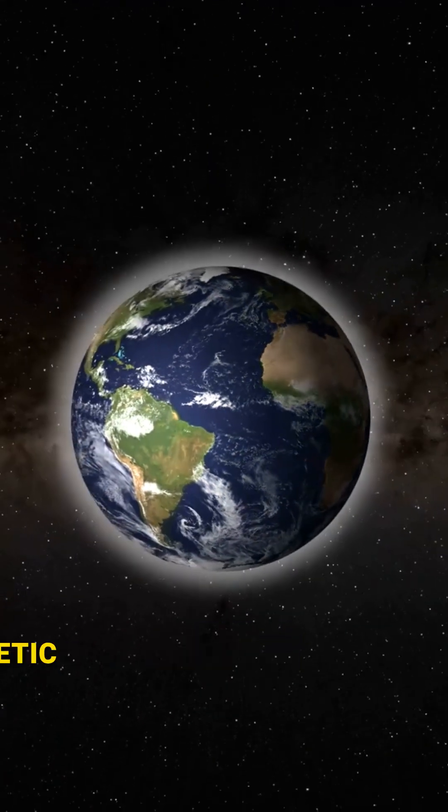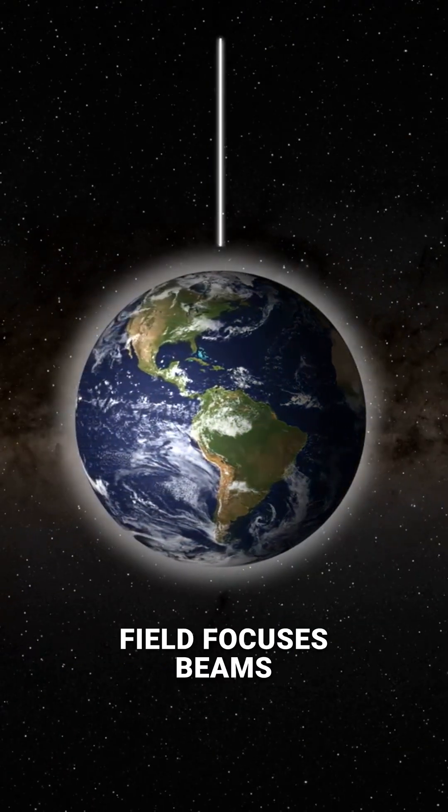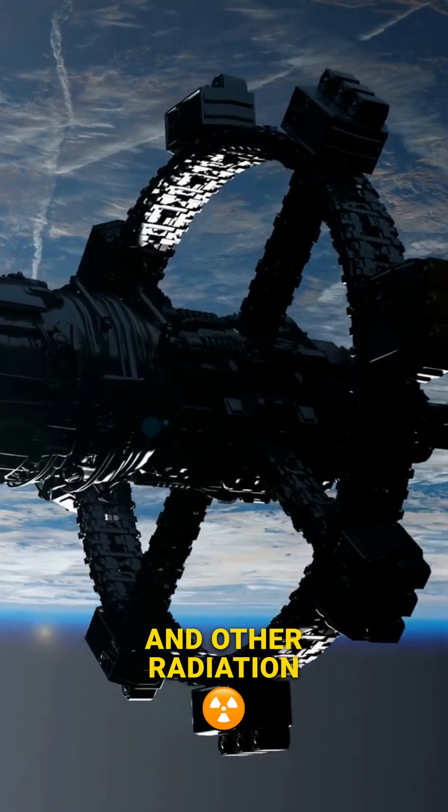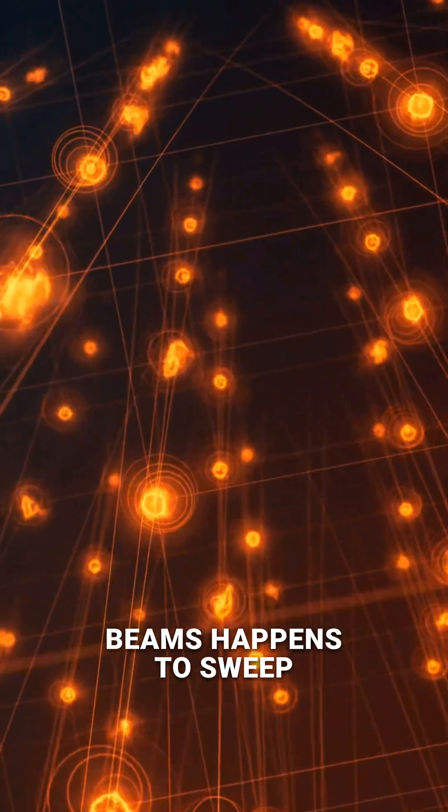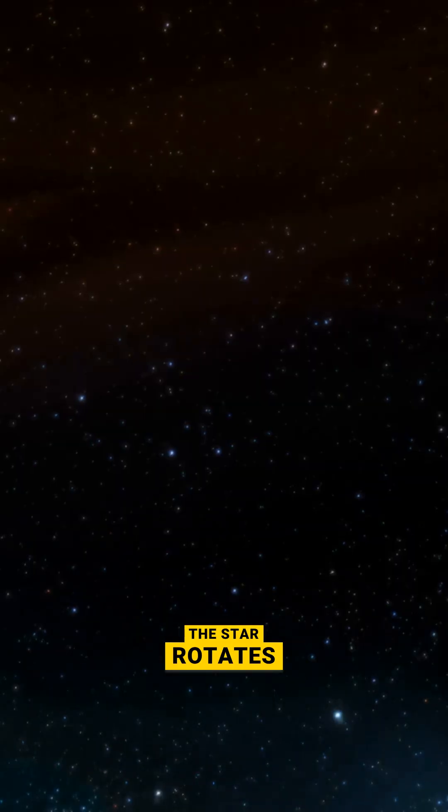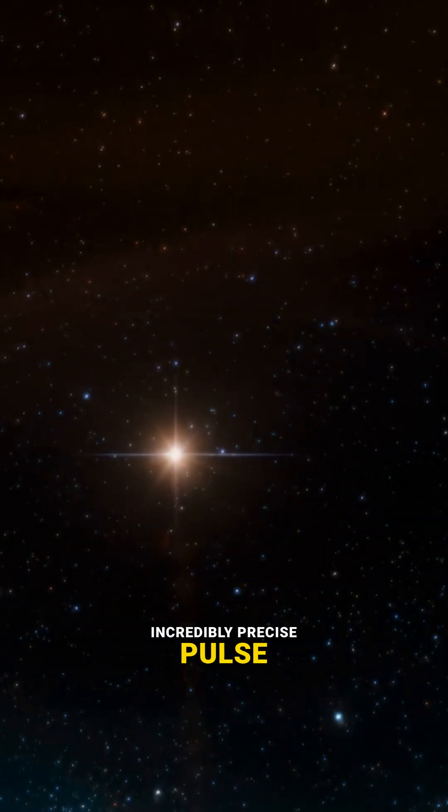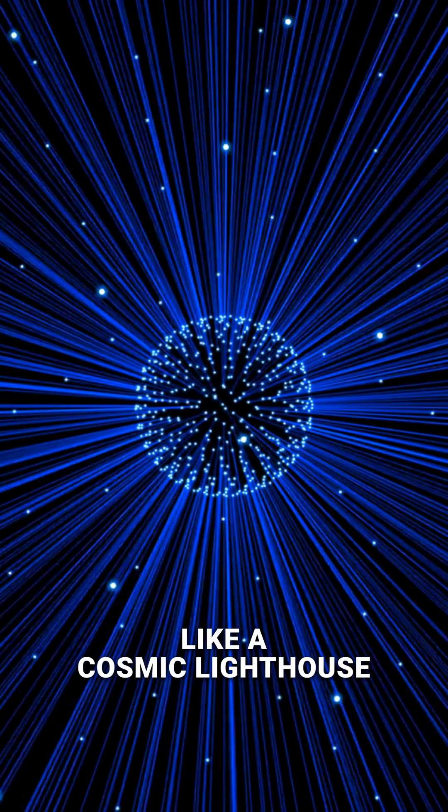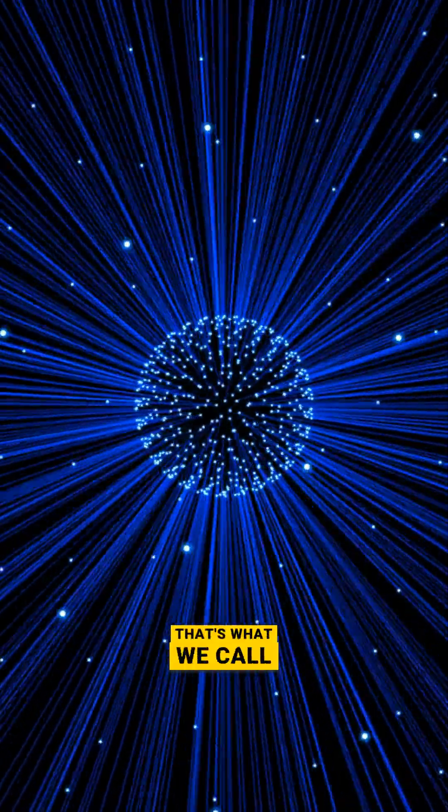As the star spins, this super strong magnetic field focuses beams of radio waves and other radiation out from its magnetic poles. If one of those beams happens to sweep across Earth as the star rotates, we detect it as a regular, incredibly precise pulse, like a cosmic lighthouse. That's what we call a pulsar.